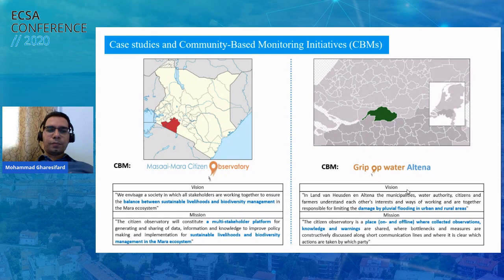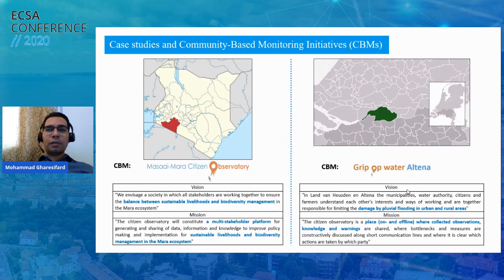Regarding mission and vision: the Masai Mara Citizen Observatory's mission was to create a multi-stakeholder platform for generating and sharing data, information, and knowledge to improve policymaking and decision-making that creates more sustainable livelihoods and biodiversity management for the area. For Grip of Water — the Dutch initiative — the idea was to create an online and offline environment where information and knowledge about fluvial flooding and weather can be shared. By sharing information, communication between the three categories of actors shapes their ability to better manage the problem.